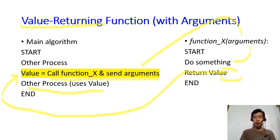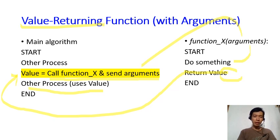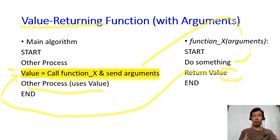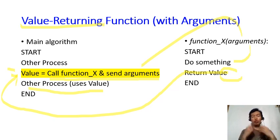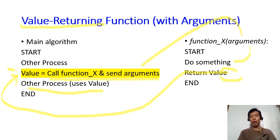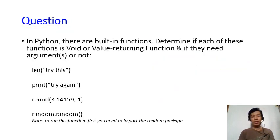It does not have to be just a single value — you can return more than one value. For example, a function can return three values. But be prepared: in the main algorithm you also need three variables to catch all those returned values. So if the function returns three values, the main algorithm needs three variables to receive them. Keep in mind it doesn't have to be just one single value.